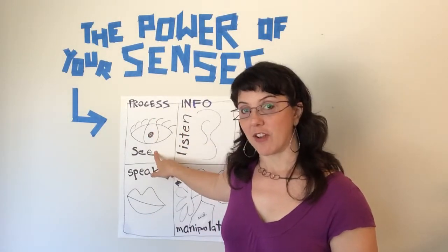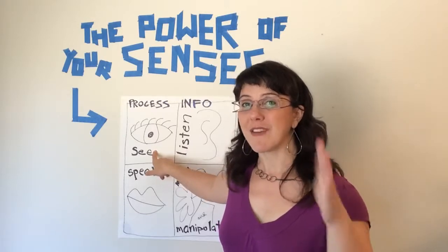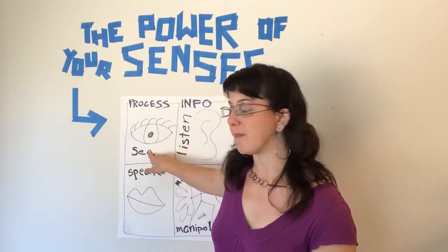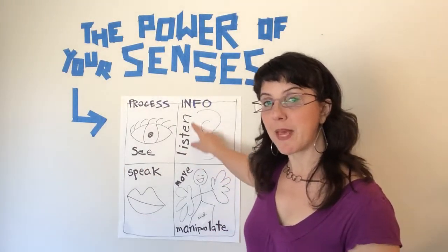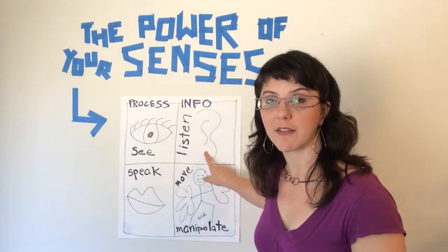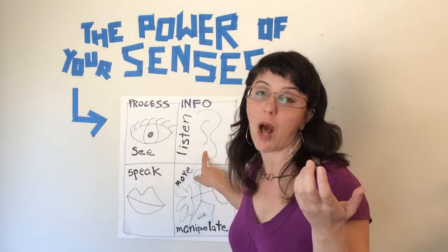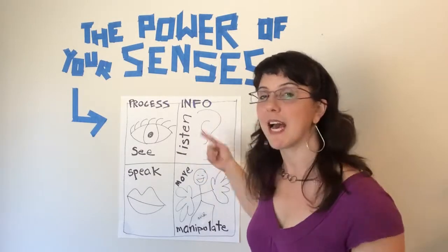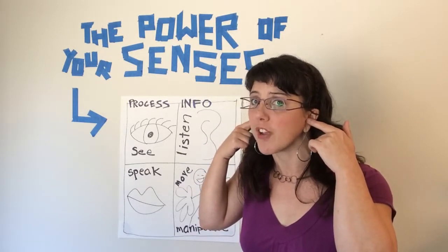We see information — we look at the board, we see pictures in a book, even reading is a way of seeing information. We listen to other people explaining information: you might listen to your teacher talking, your classmates, or watch and listen to a video. All of that is having information come in through your auditory channels.